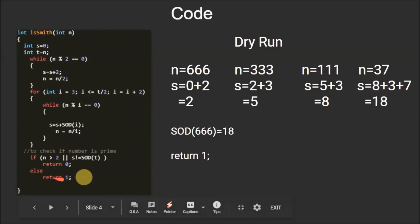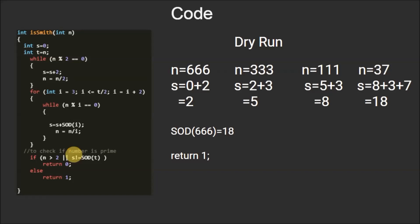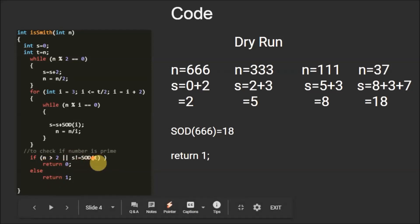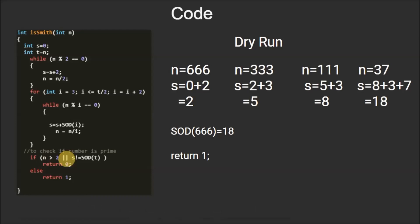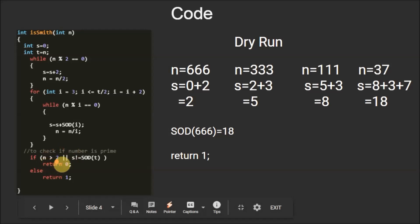After the for loop, we have a condition that ensures the given number is composite, since a Smith number is always composite. The condition is: if n is greater than 2 or s is not equal to the sum of digits of t, then we return 0, else we return 1. The condition n greater than 2 ensures the number is composite — for example, if the number were prime like 13, the value of n would remain 13 at the end, which is greater than 2, so 0 would be returned.